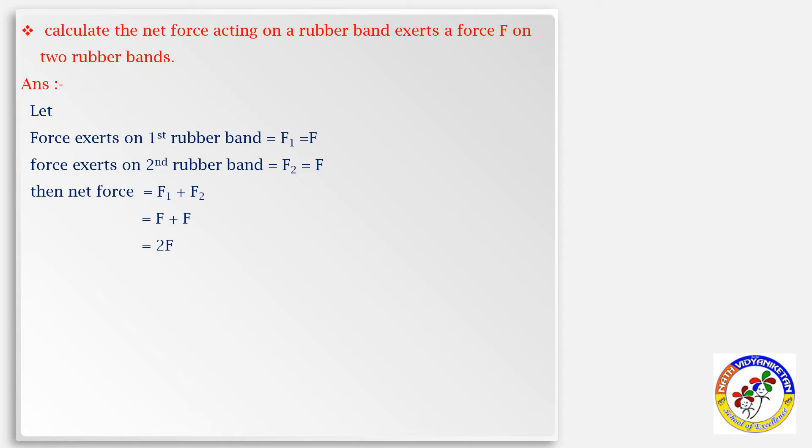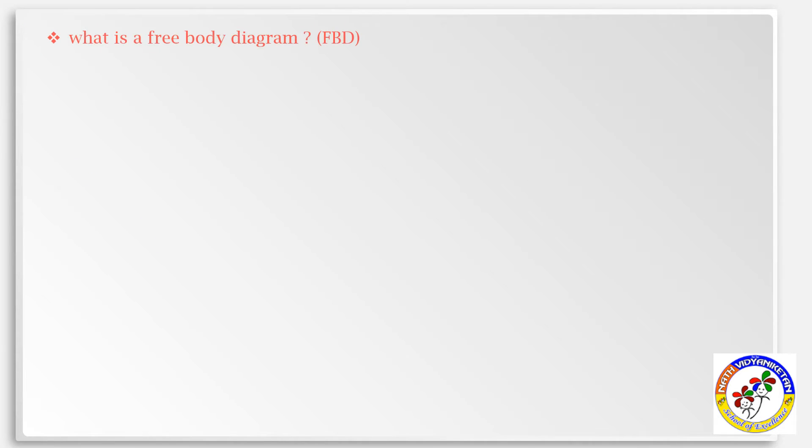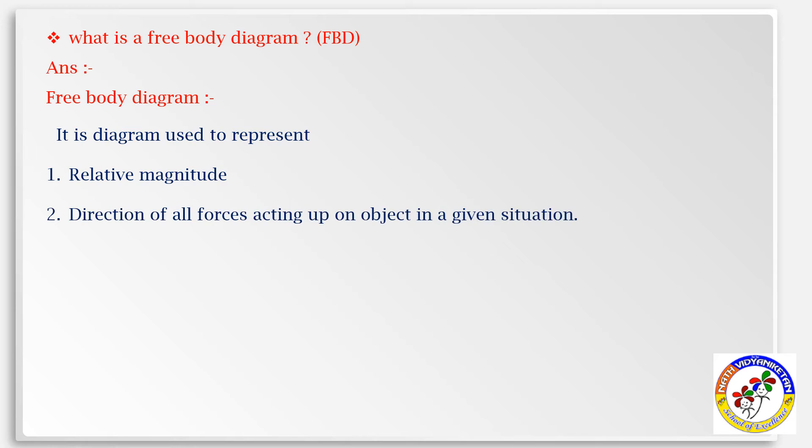What is a free body diagram? A free body diagram is a diagram used to represent relative magnitude and direction of all forces acting upon an object in a given situation. It's a simple diagram representation.